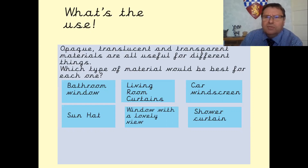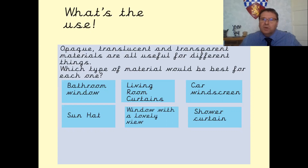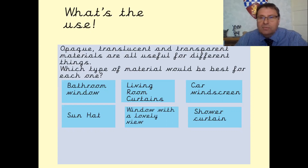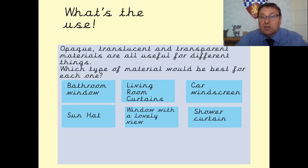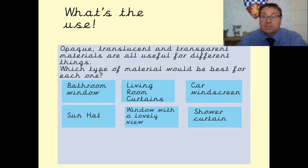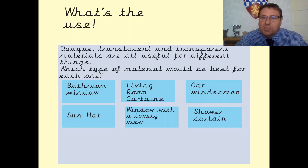Windows with a lovely view. Now I've got a lovely view out of the window opposite me now. So if that window was opaque or translucent I wouldn't be able to see through it and I wouldn't be able to see the lovely view of my garden. So obviously windows need to be transparent.